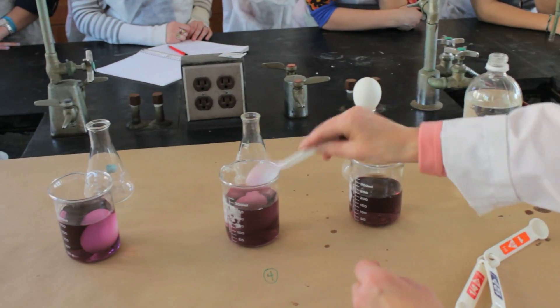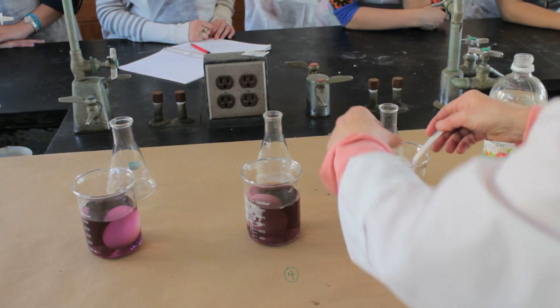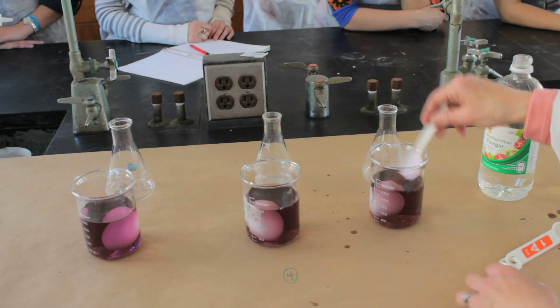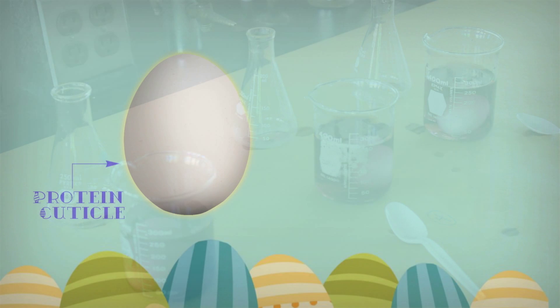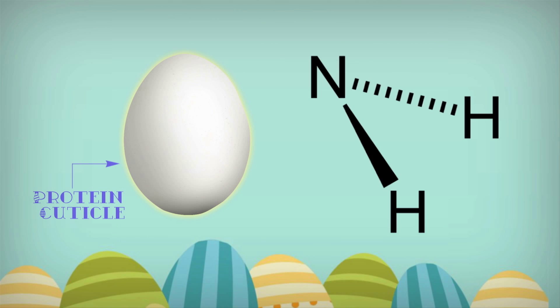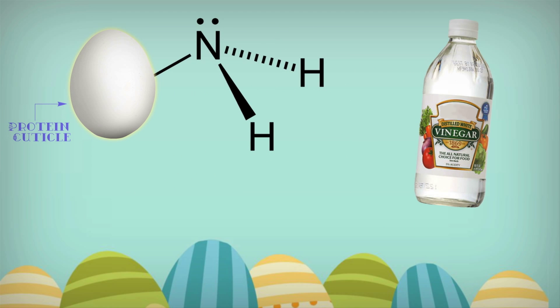The protein cuticle is a protein on the surface of the egg. As a protein, it ends in an amine group. An amine group is a nitrogen with two hydrogens on it, and the third bond is to the protein. That nitrogen has an unshared pair of electrons sitting on it. We're going to look at how vinegar interacts with that amine end. It is a weak acid.